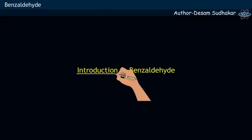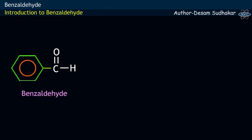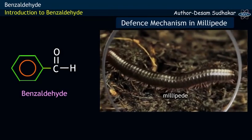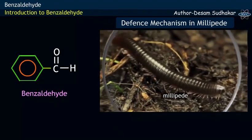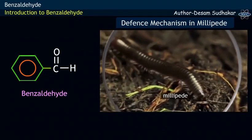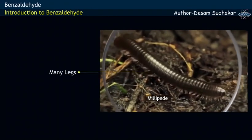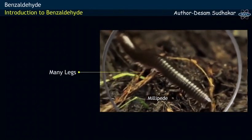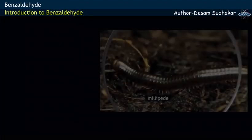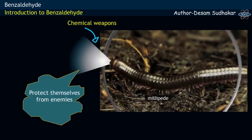Let us know about benzaldehyde by considering the defense mechanism used by few millipede species. Millipedes are small creatures having many legs. The special feature of this millipede is to use chemical weapons to protect themselves from enemies.